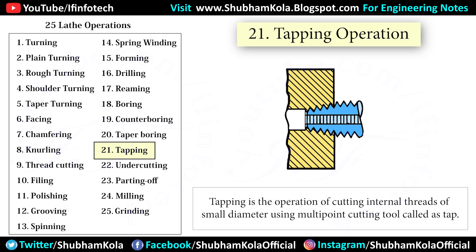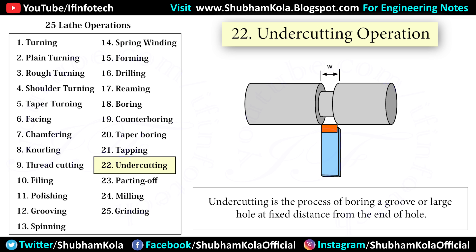Tapping is the operation of cutting internal threads of small diameter using a multipoint cutting tool called a tap. In a lathe machine, the work is mounted on a chuck or faceplate and revolved at slow speed, and a tap of required size is held in a special fixture mounted on the tailstock spindle. Undercutting is the process of boring a groove or enlarging a hole at a fixed distance from the end of a hole, similar to boring, and is done at the end of internal threads or a counter bore to provide clearance for the tool.